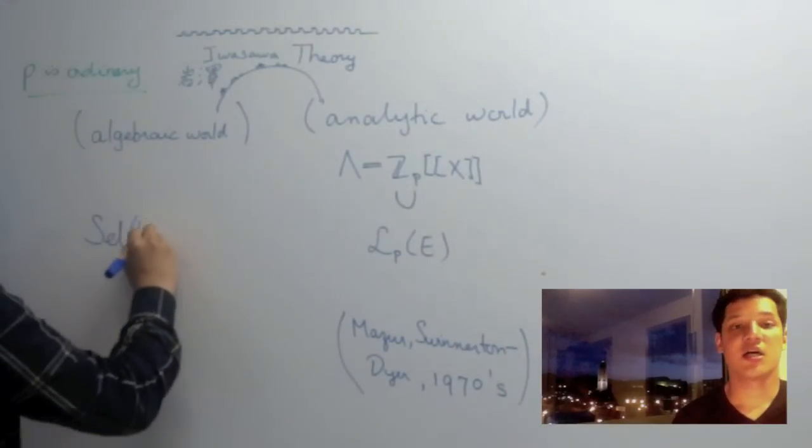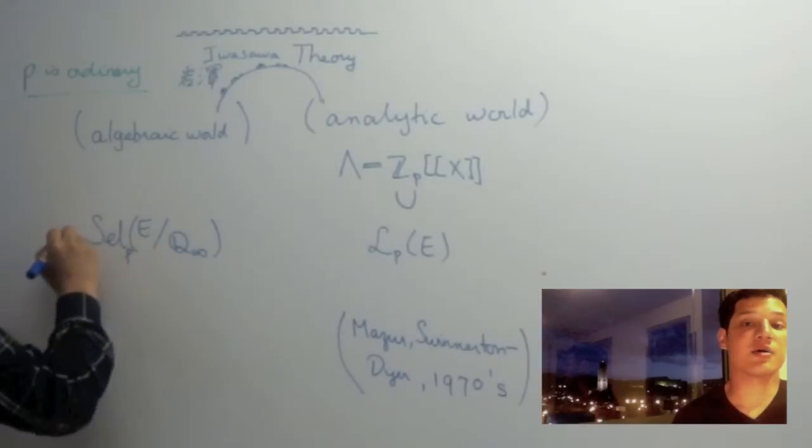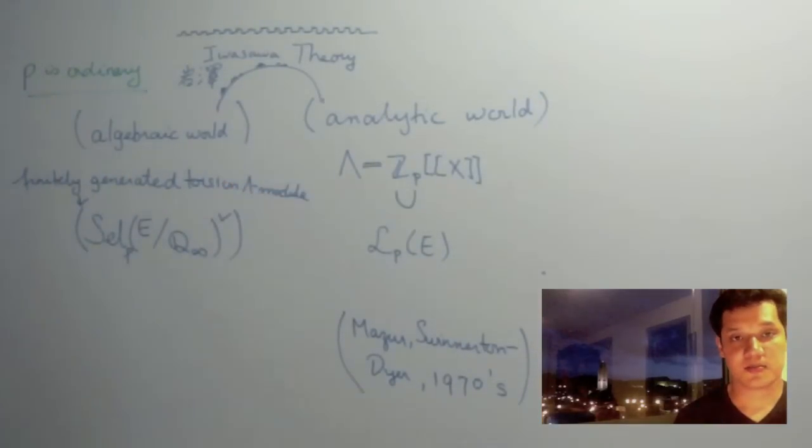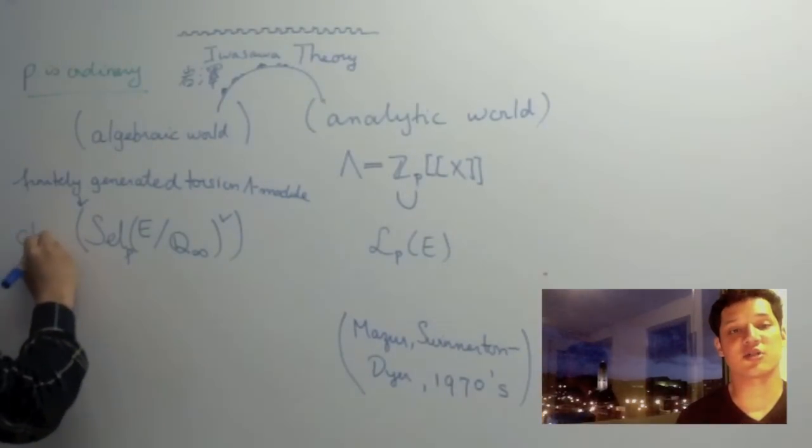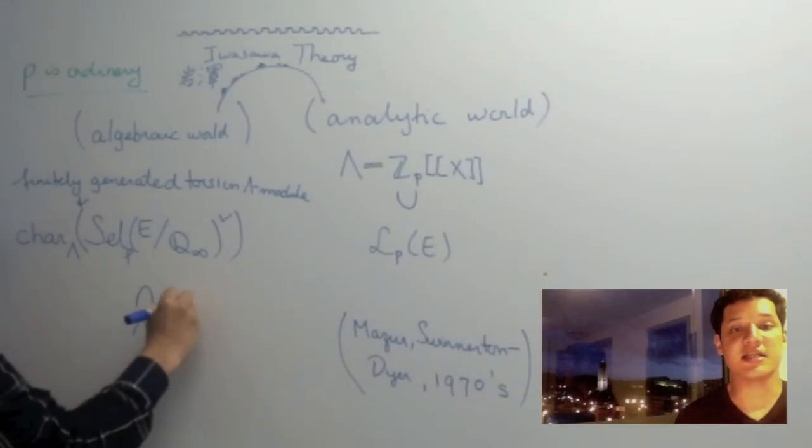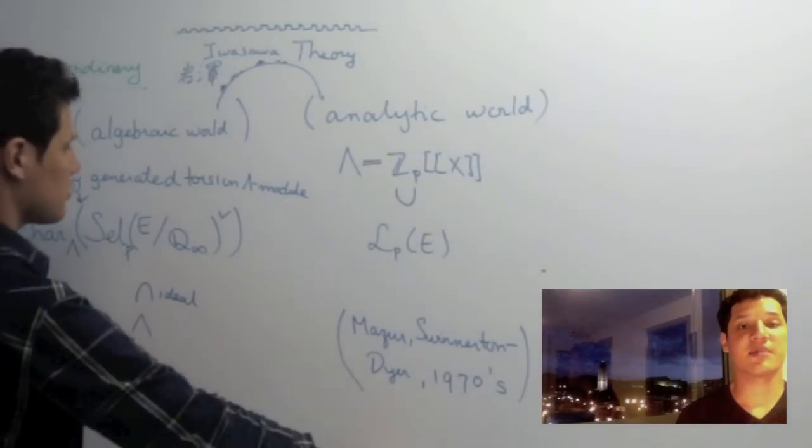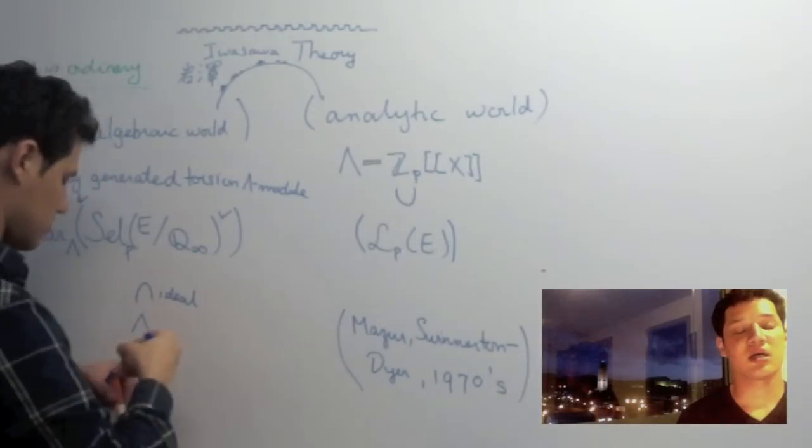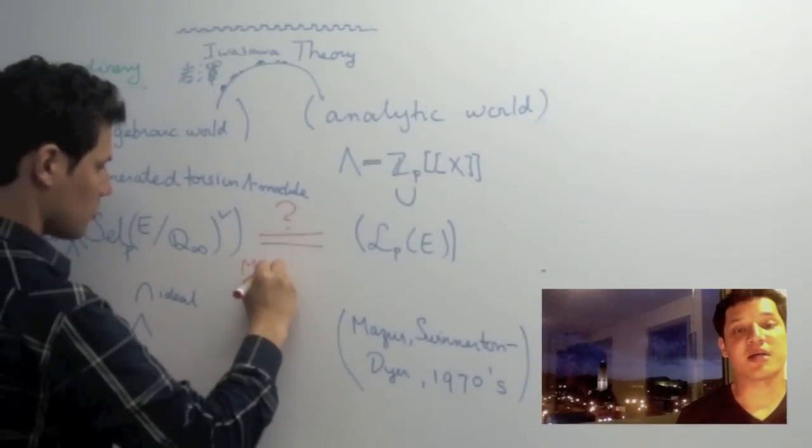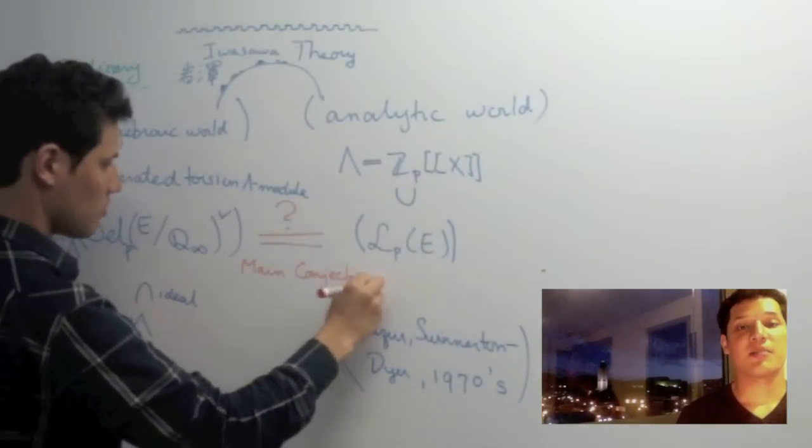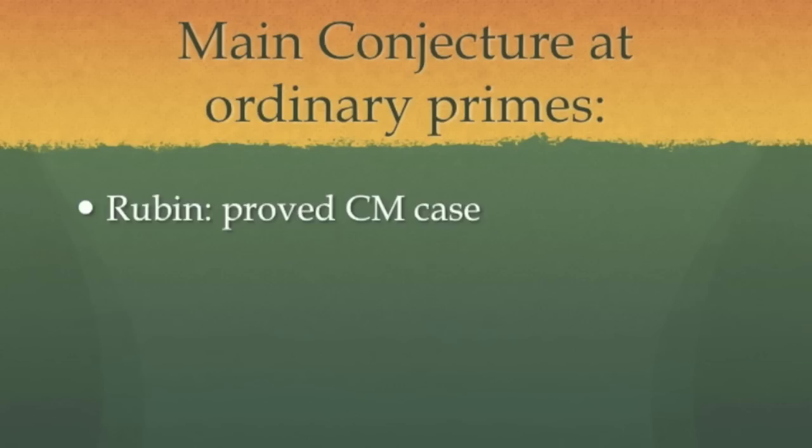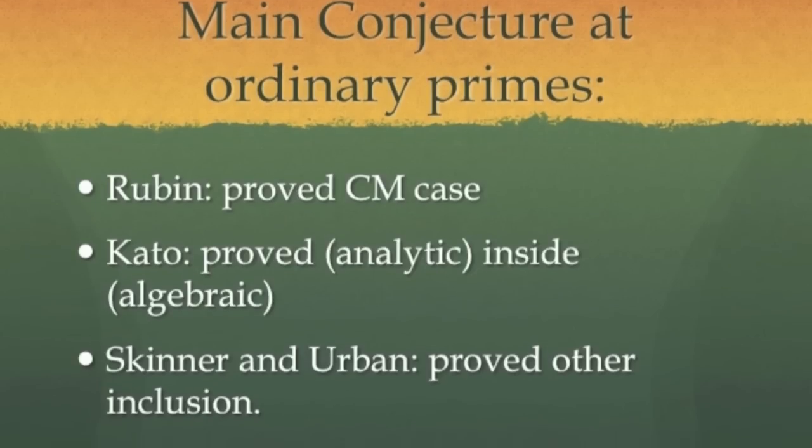On the algebraic side, we may look at the p-primary part of the Selmer group over Q infinity, its Pontryagin dual. This is a finitely generated torsion lambda module. Now the reason finitely generated torsion lambda modules are so special is because they reflect some of their nice properties inside a special ideal called the characteristic ideal. The Iwasawa main conjecture, formulated by Mazur in the 1970s, asserts that the characteristic ideal of the dual of the p-primary part of the Selmer group over Q infinity is generated by the p-adic L function of Mazur and Swinnerton-Dyer. The main conjecture is now a theorem due to Rubin, Kato, and unpublished work Skinner and Urban.